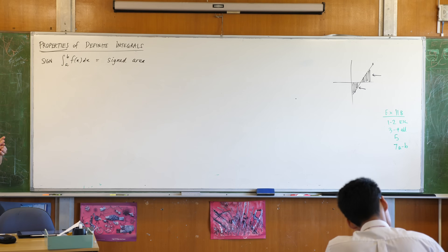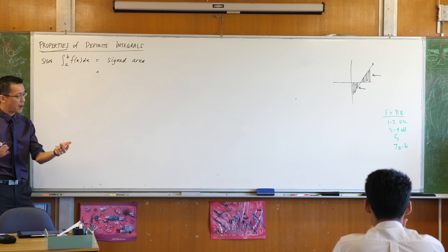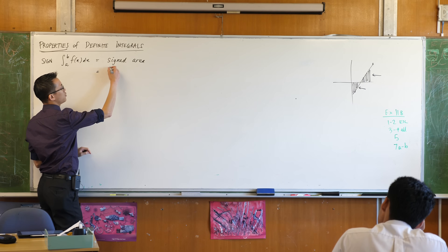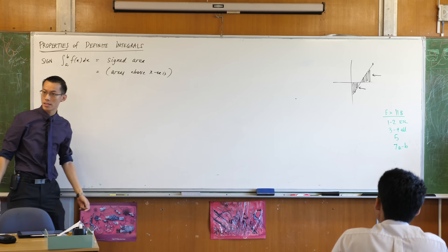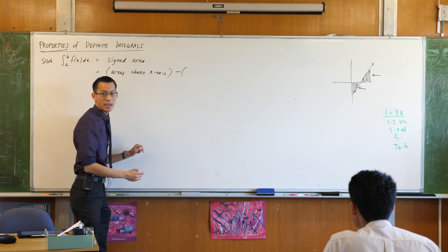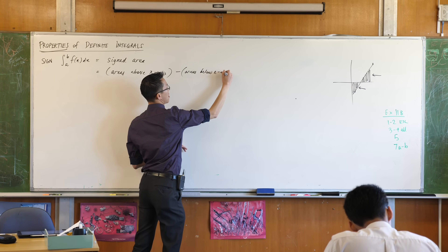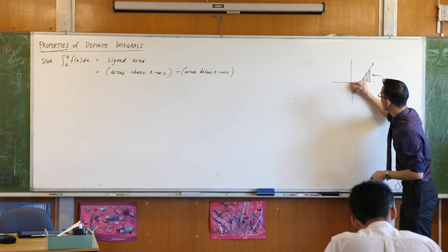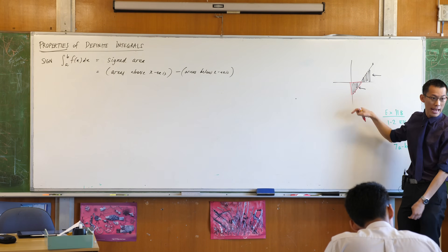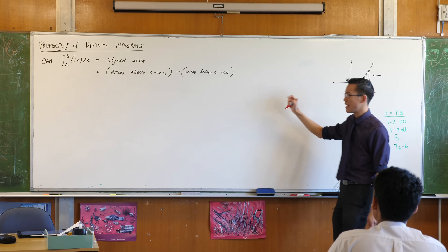It's a signed area, which means you can have such a thing as negative areas. It doesn't make sense in the context of classical measurement, but in the context of integration it has to be. How do you work out the signed area? There are two parts — parts above and parts below. You add the areas above the x-axis, those are all positive, and then you subtract all the areas that are below the x-axis. For example, the area below the x-axis has to be regarded as negative, so we subtract it.